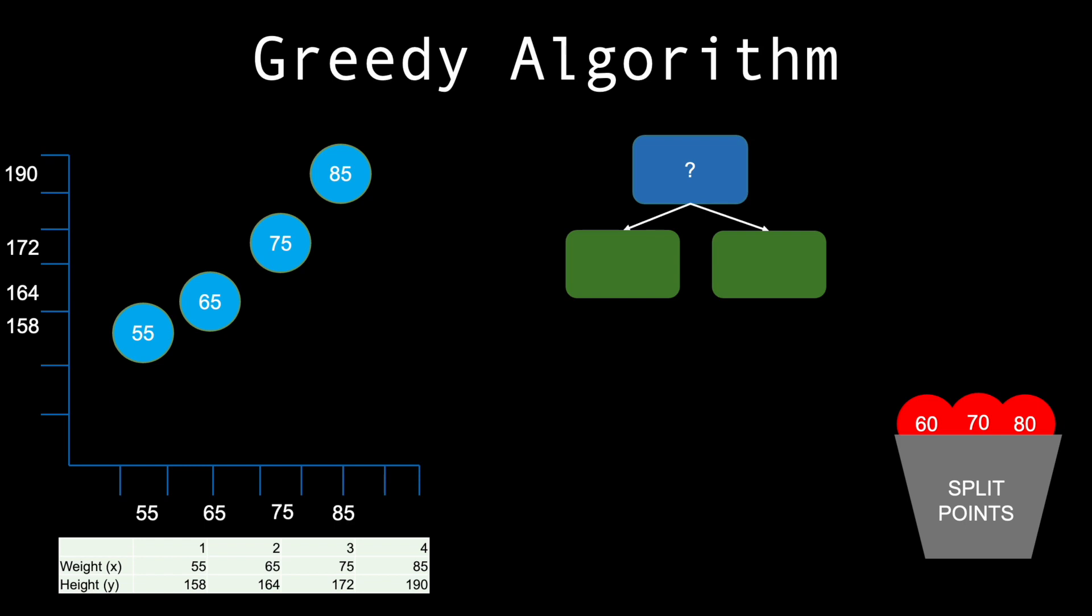So, for every feature xj, say weight and shoe size, we create a set of candidate split points, and choose the best feature split point that maximizes something called the gain.